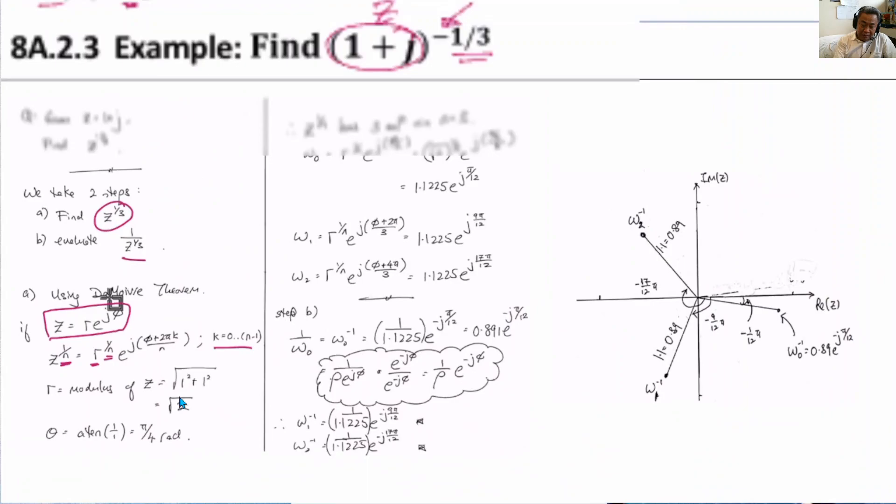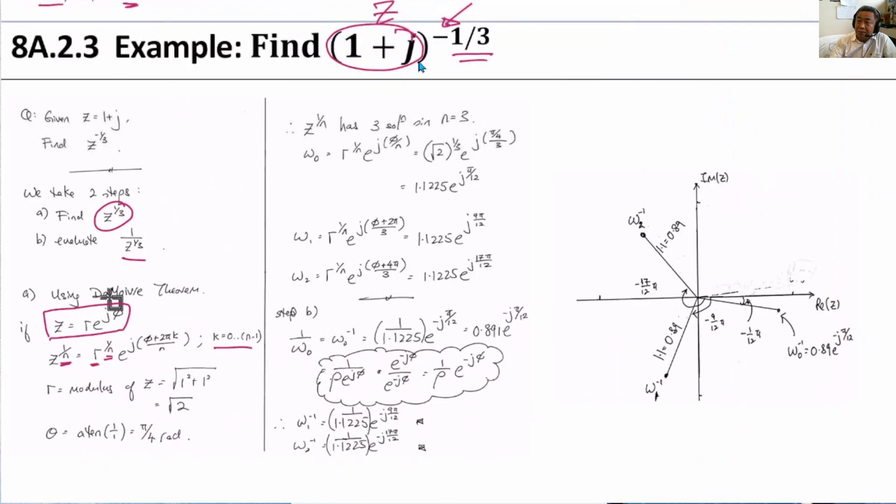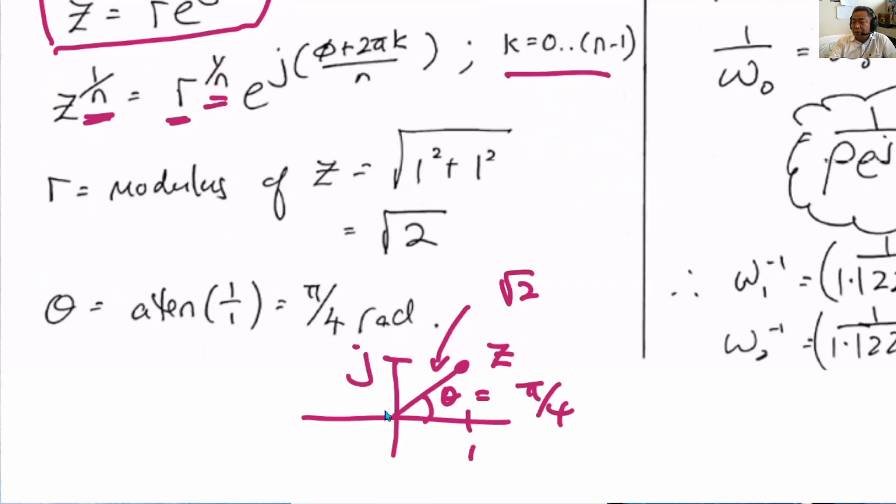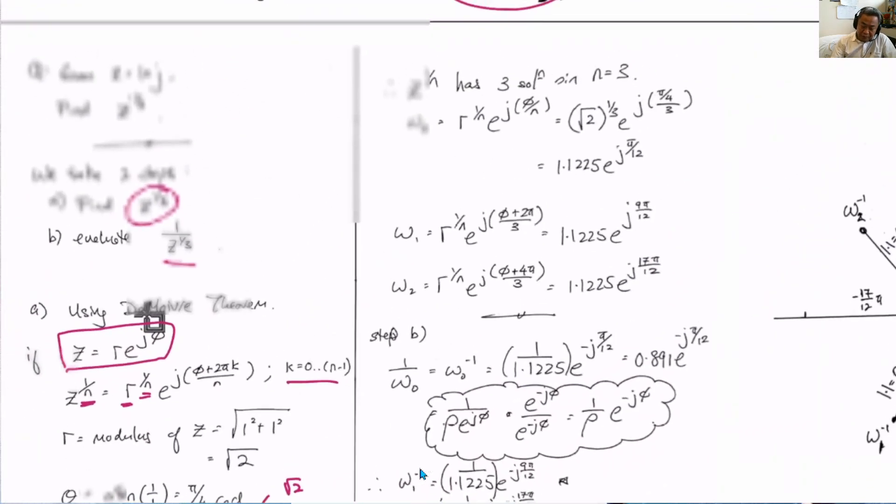Now, our problem is 1 plus j. So let's go and show where is 1 plus j. This is 1, and this is j. So this is z. So this is theta. So the length is, of course, root 2, because one side is 1, so it's 1 square plus the other side is 1 square, square root, so it's square root of 2. The theta is very nice because it is nothing but π/4, because the opposite is 1, and the adjacent is 1. So it's π/4 radian, and now we're going to substitute.